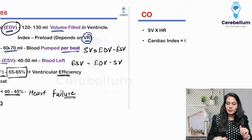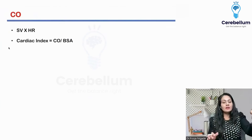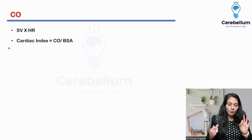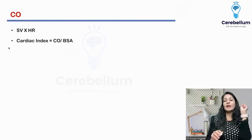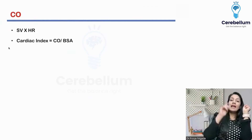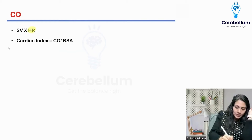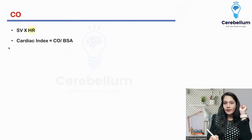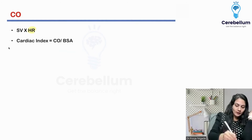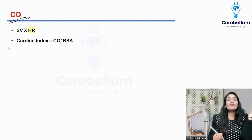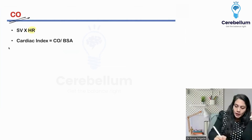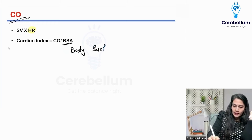Per minute, how much blood can my heart output? That is cardiac output. In one stroke, how much blood is ejected — that's stroke volume. How many such strokes happen per minute — that's heart rate. So cardiac output = stroke volume × heart rate. And if you calculate cardiac output per unit body surface area, that is called cardiac index.